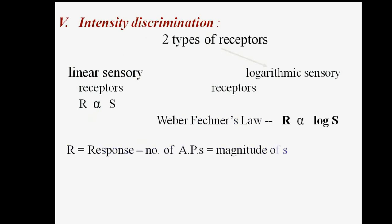This can be explained on the basis of Weber-Fechner's law. According to this law, the response R is directly proportional to the log of the strength of the stimulus S, i.e., R ∝ log S. There are two types of receptors: linear sensory receptors and logarithmic sensory receptors. In linear sensory receptors, R is directly proportional to S. But in logarithmic sensory receptors, R is directly proportional to log S.